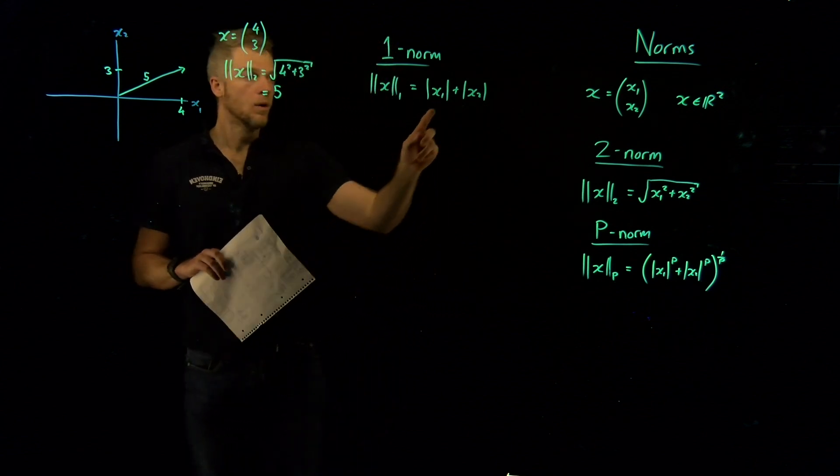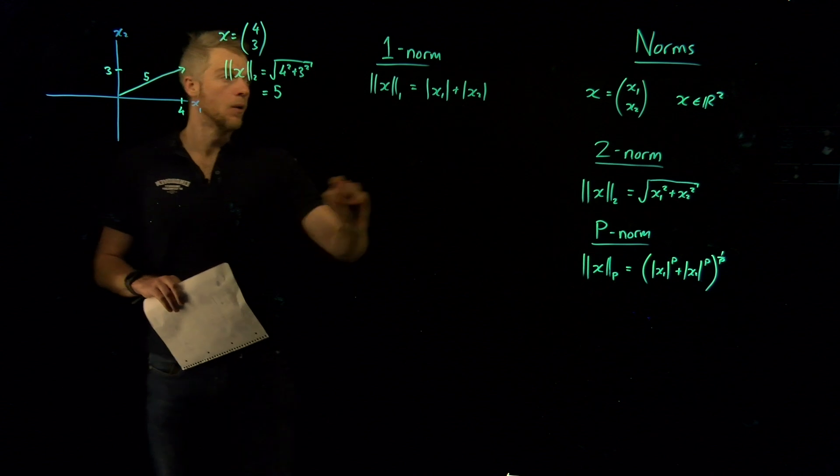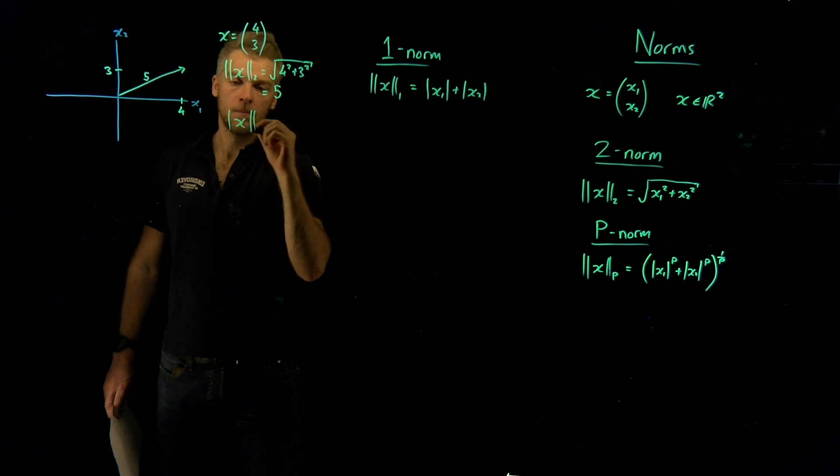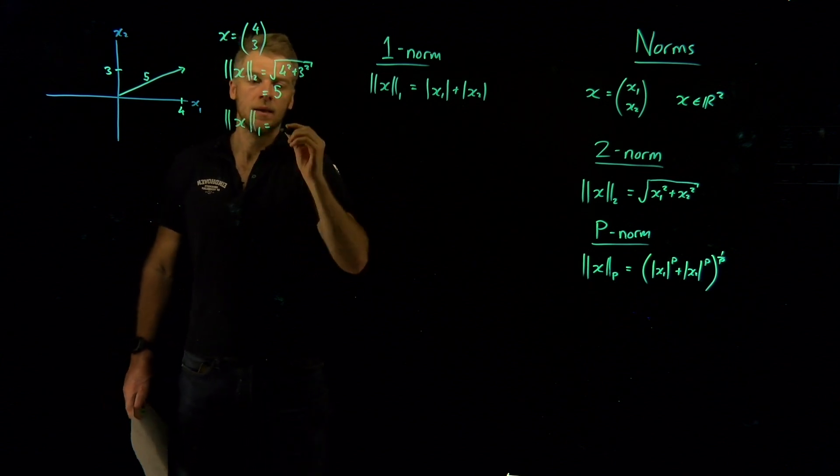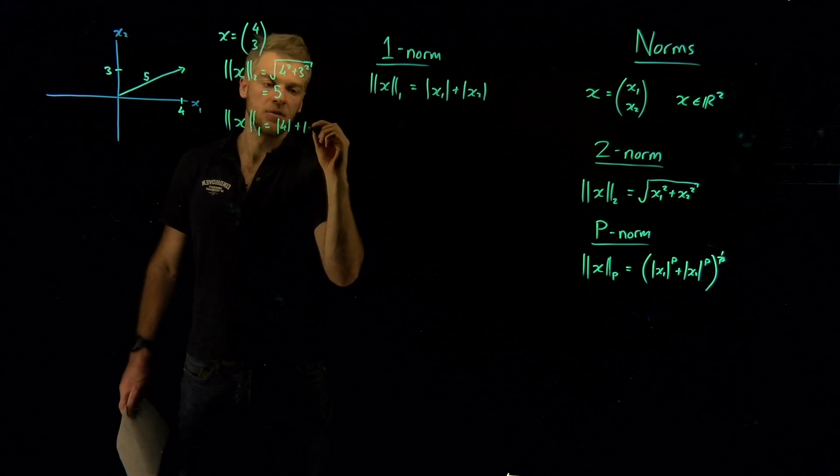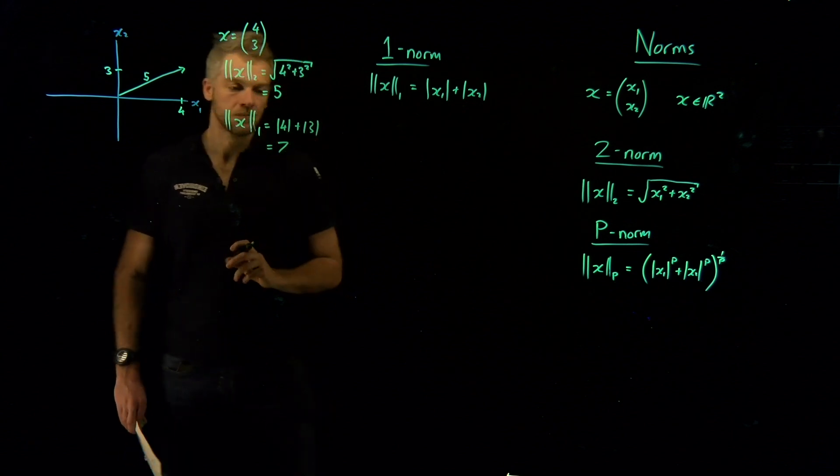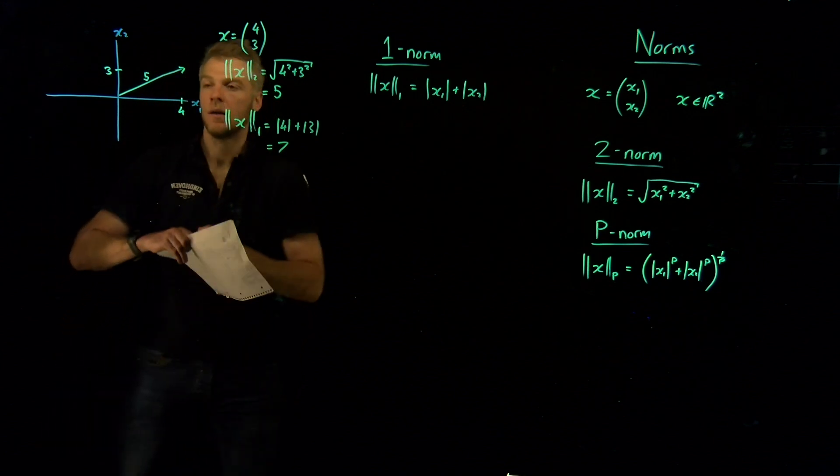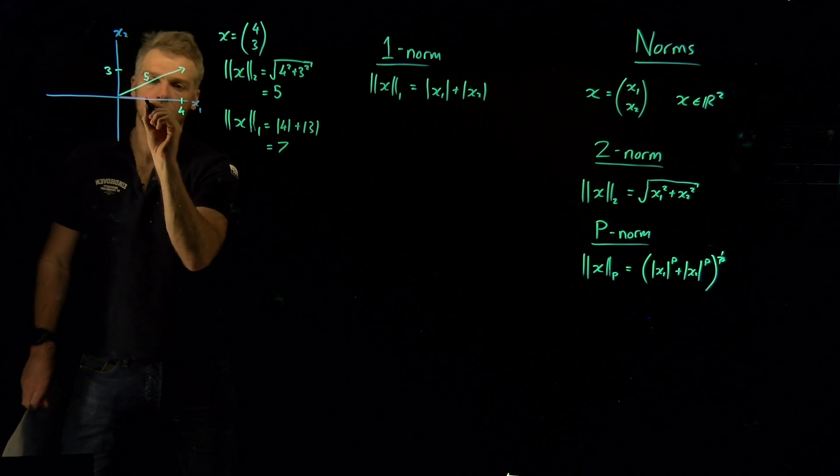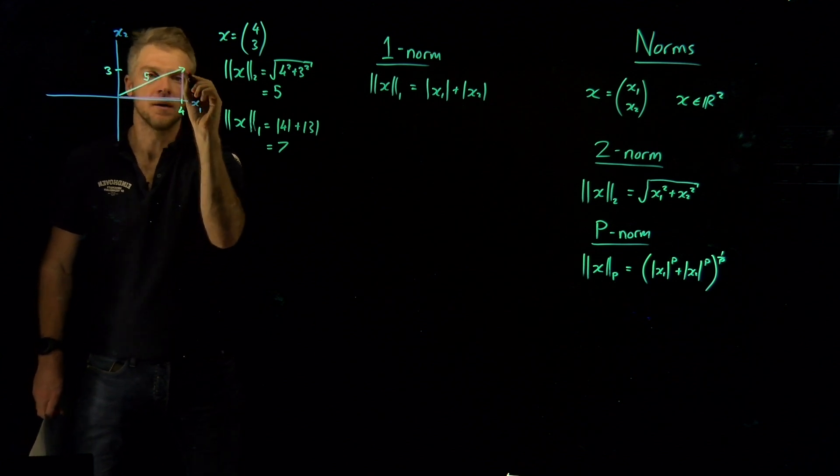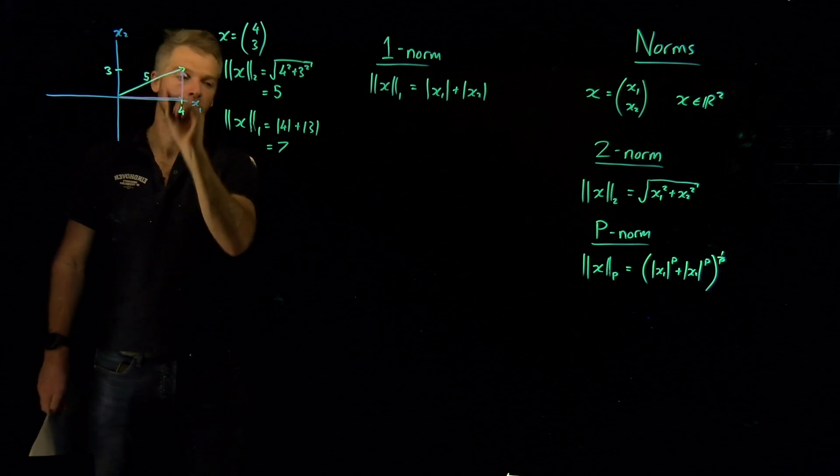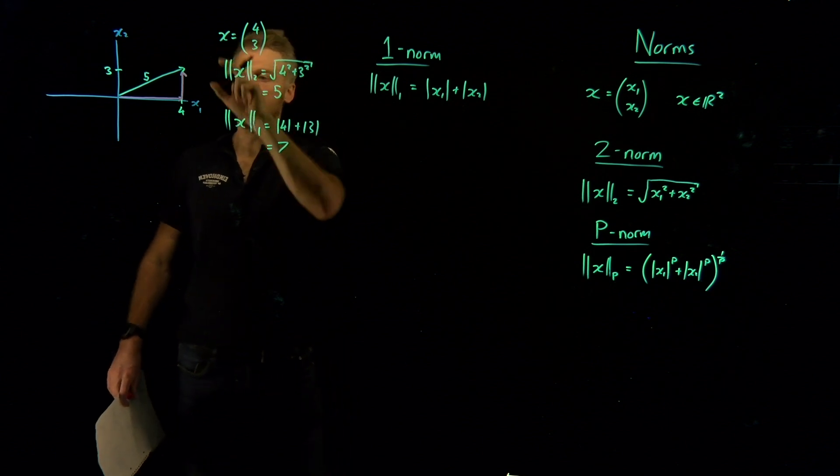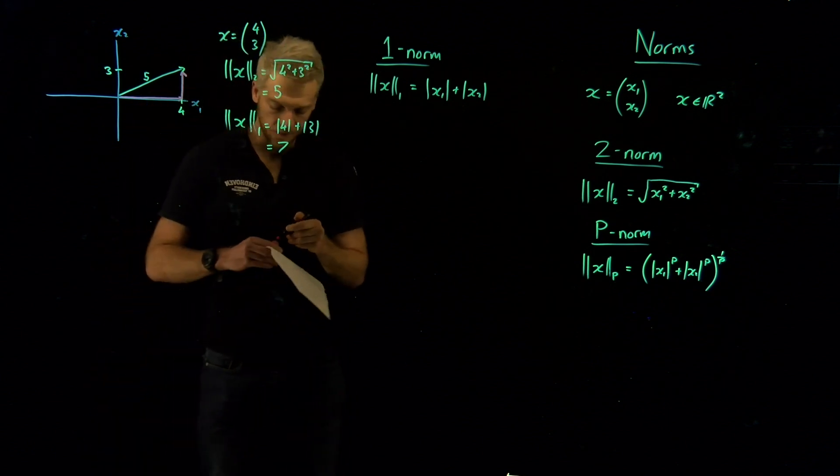Now can we understand this 1-norm graphically? Well yeah, of course we can. What is the absolute value of x1? Well it's 4. And what is the absolute value of x2? Well it's 3. So that means that the 1-norm is going to be equal to the absolute value of 4, plus the absolute value of 3, which is just going to be 7. And graphically, what does that mean? Well, it's this length. It's the length if you were to go along here, and then up here. It's the sum of the lengths of this triangle here. That's how you can understand it. So this is another way you can subjectively measure the length of this vector. You can just sum up all of its sides like this.